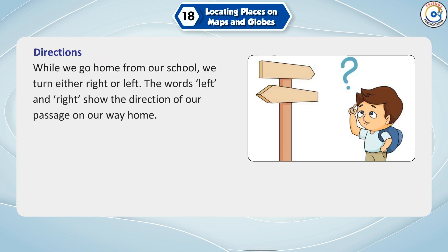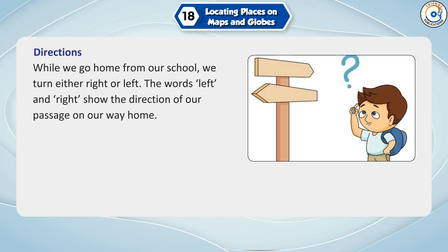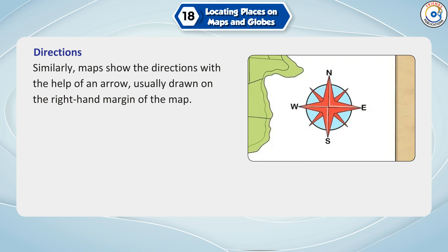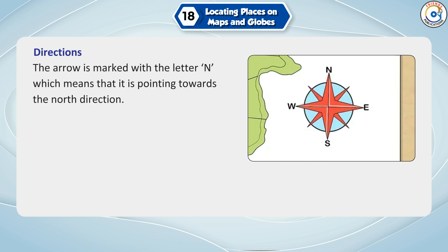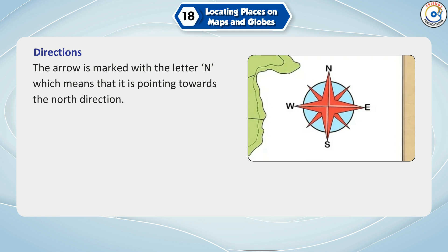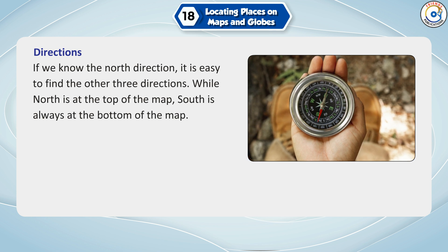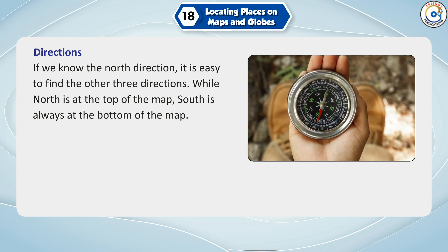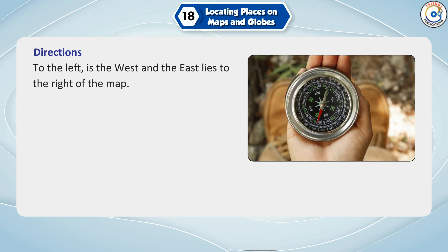Directions: While we go home from our school, we turn either right or left. Maps show the directions with the help of an arrow, usually drawn on the right-hand margin of the map. The arrow is marked with the letter N, which means it is pointing towards the north direction. If we know the north direction, it is easy to find the other three directions. While north is at the top of the map, south is always at the bottom. To the left is the west and the east lies to the right of the map.